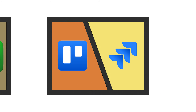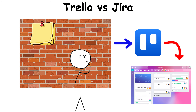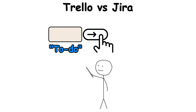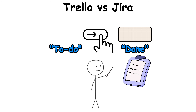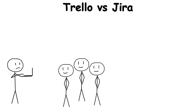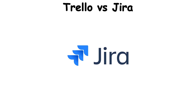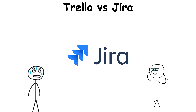Trello vs. Jira: Sticky notes on a wall — that's basically Trello in digital form. Drag a card from to-do to done, and your project moves forward. Students, startup teams, even families planning vacations use it because it's instantly clear. Jira, though, is a corporate monster — sprints, issue tracking, multi-layered workflows.